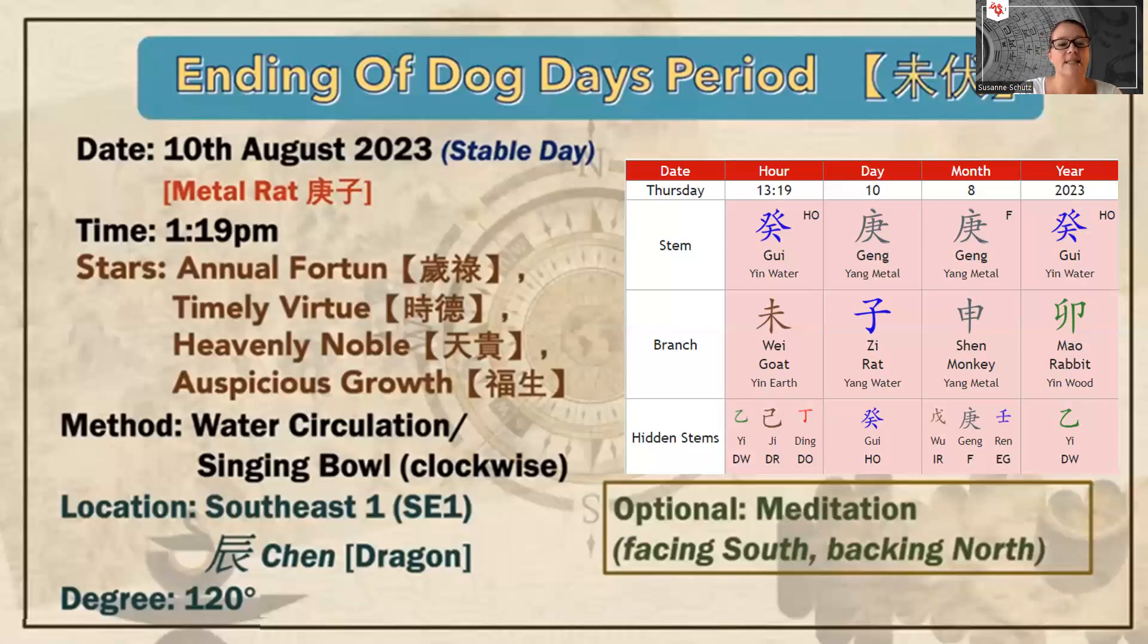On this 10th of August at 1:19 p.m., and that's local time wherever you are, you don't have to translate that into any other time zone. You need to implement a water activation in the Southeast 1 sector. For feng shui practitioners, you know that is the dragon sector. For those not so familiar with feng shui, you stand in the center of your flat, not at the office. Use a compass and check where you have the 120 degree range, plus minus five degrees, 115 to 125 degrees. Where do you have this degree range in your home?